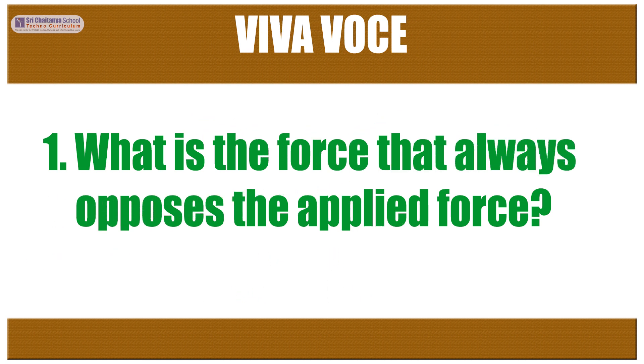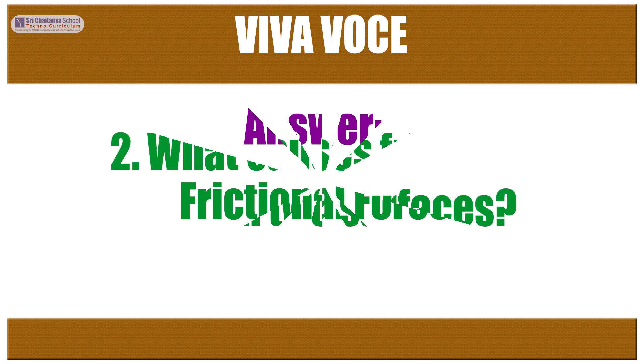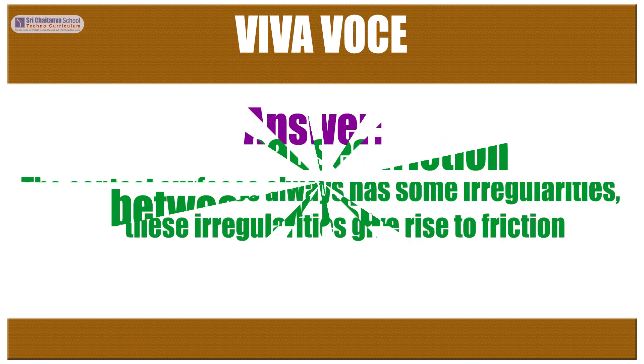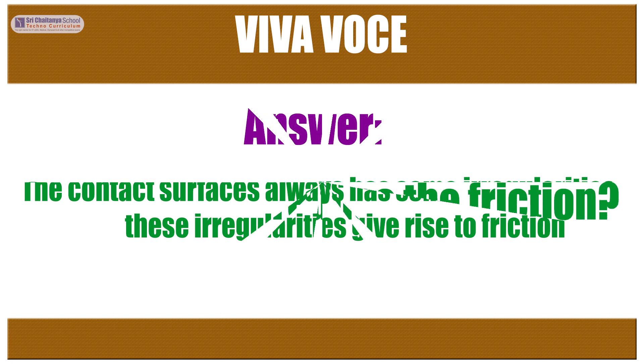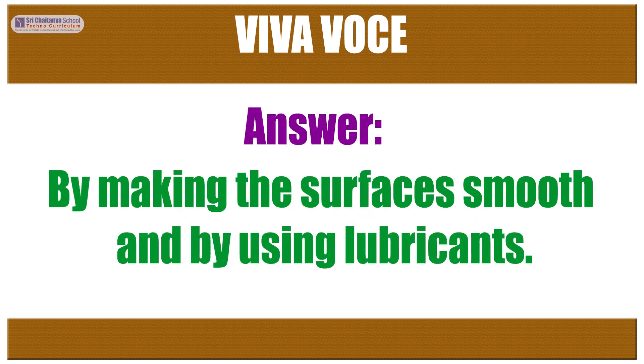Based on this experiment I'll ask a few questions, my dear children. The first question is what is the force that always opposes the applied force? The answer is frictional force. The second question is what causes friction between two surfaces? The answer is the contact surfaces always have some irregularities. These irregularities give rise to friction. The third question is how can we reduce the friction? The answer is by making the surfaces smooth and by using lubricants. Thank you.